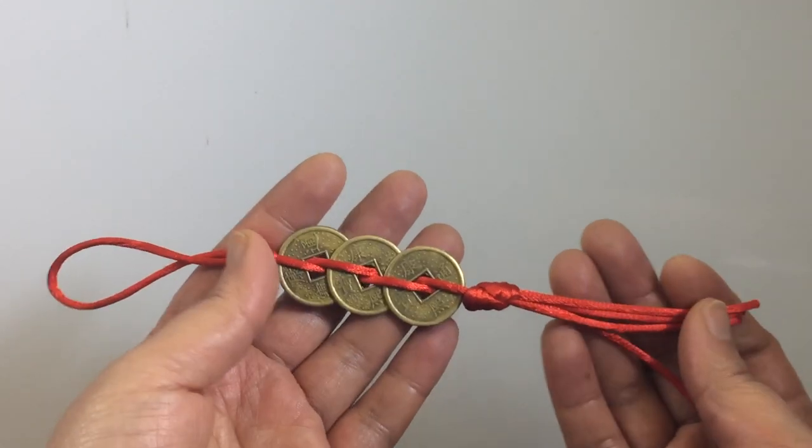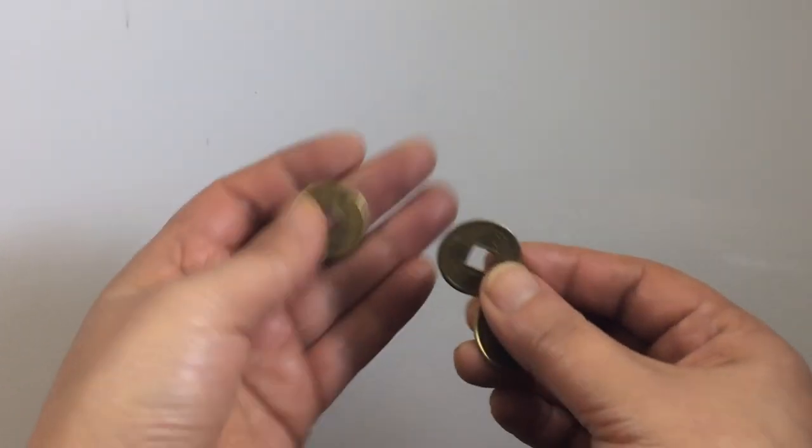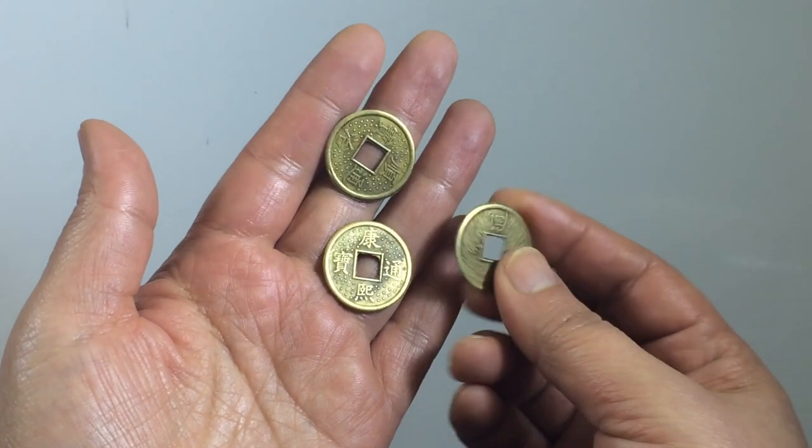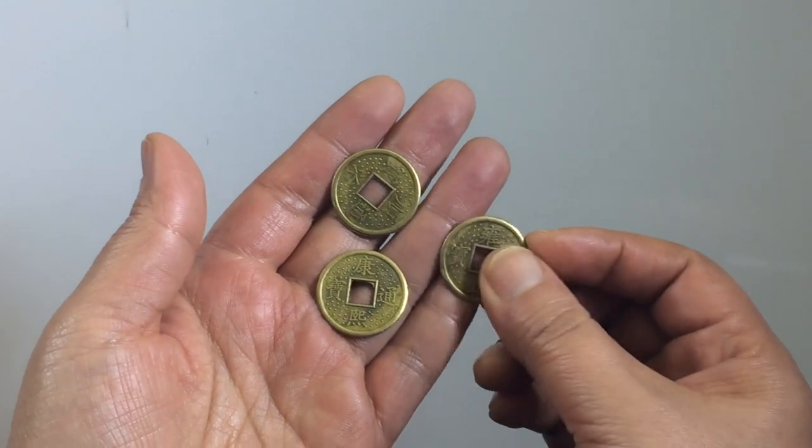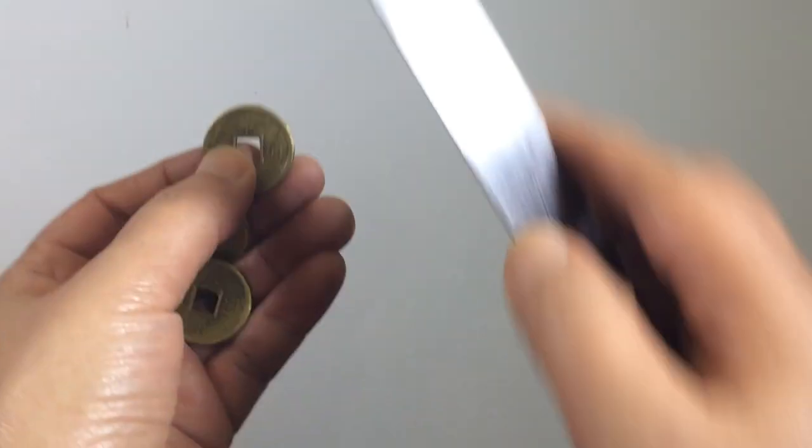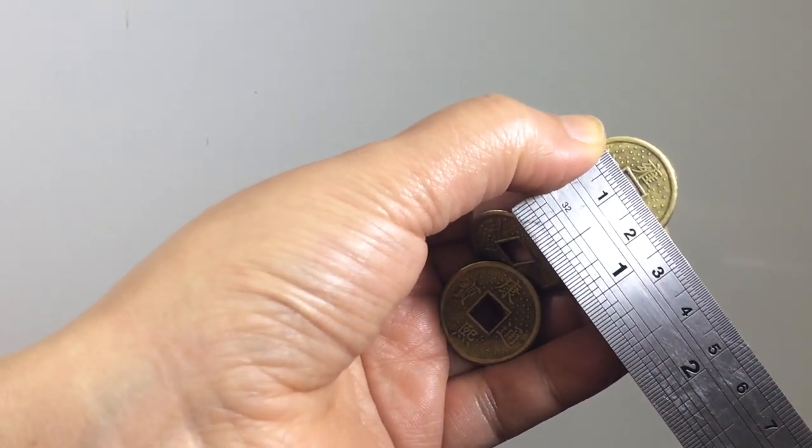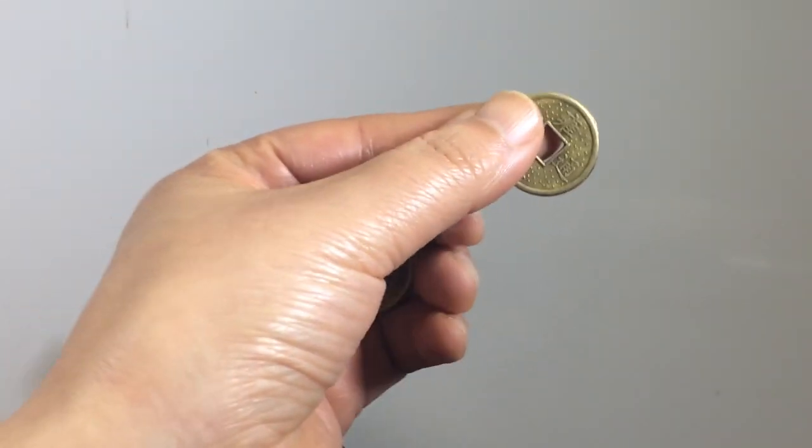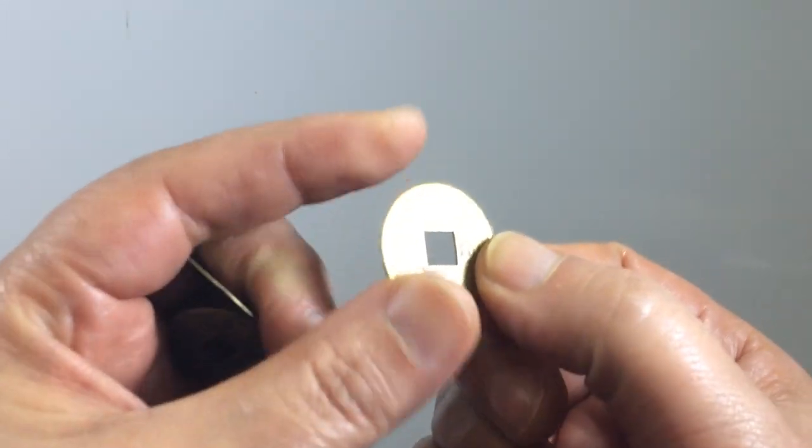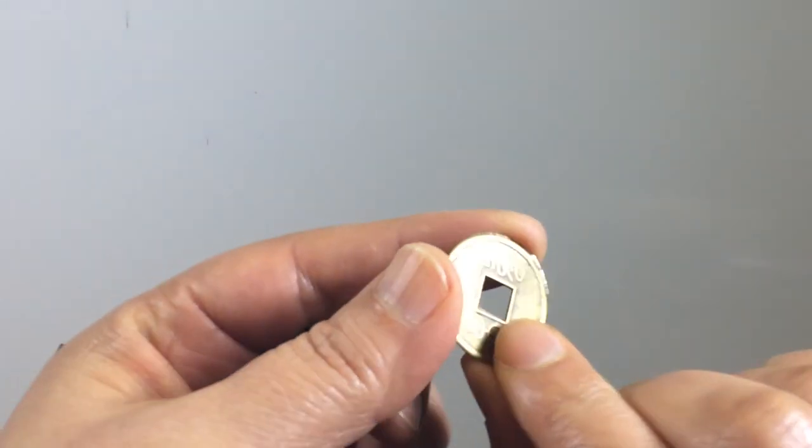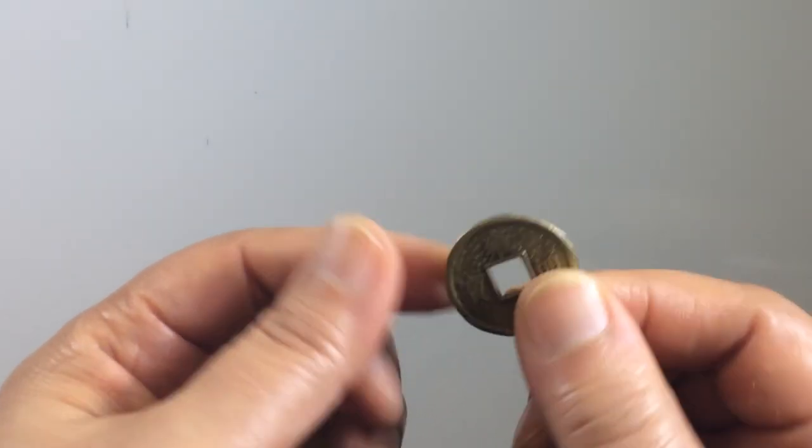Let's start. We need three coins. The coins I use are 23 millimeters in diameter. The Chinese coin has two sides, one character side and another with just a pattern.